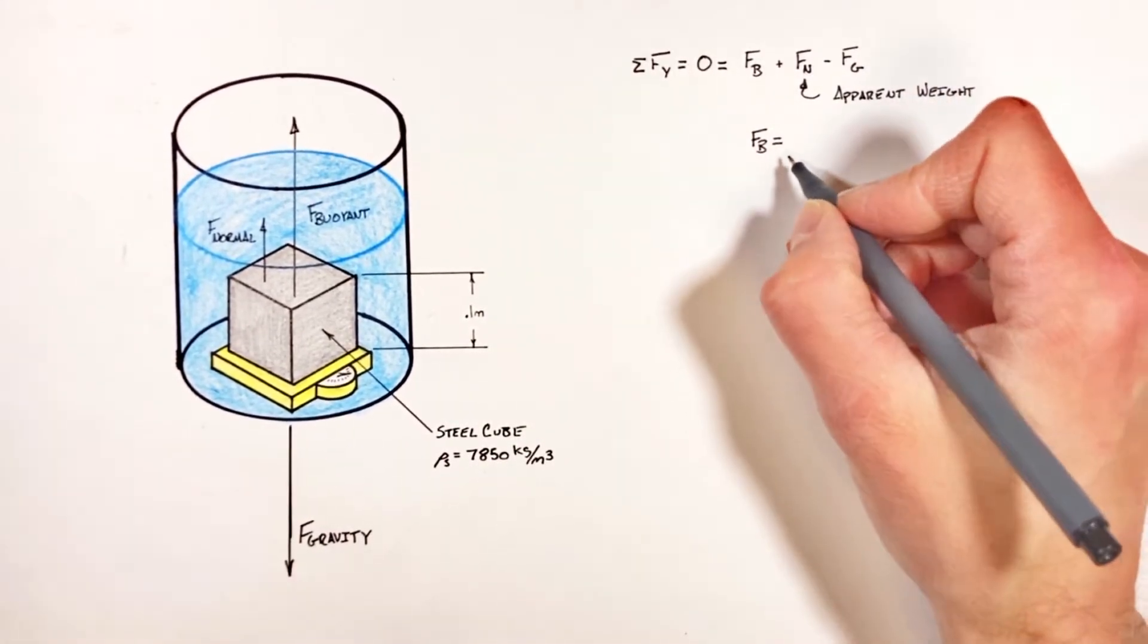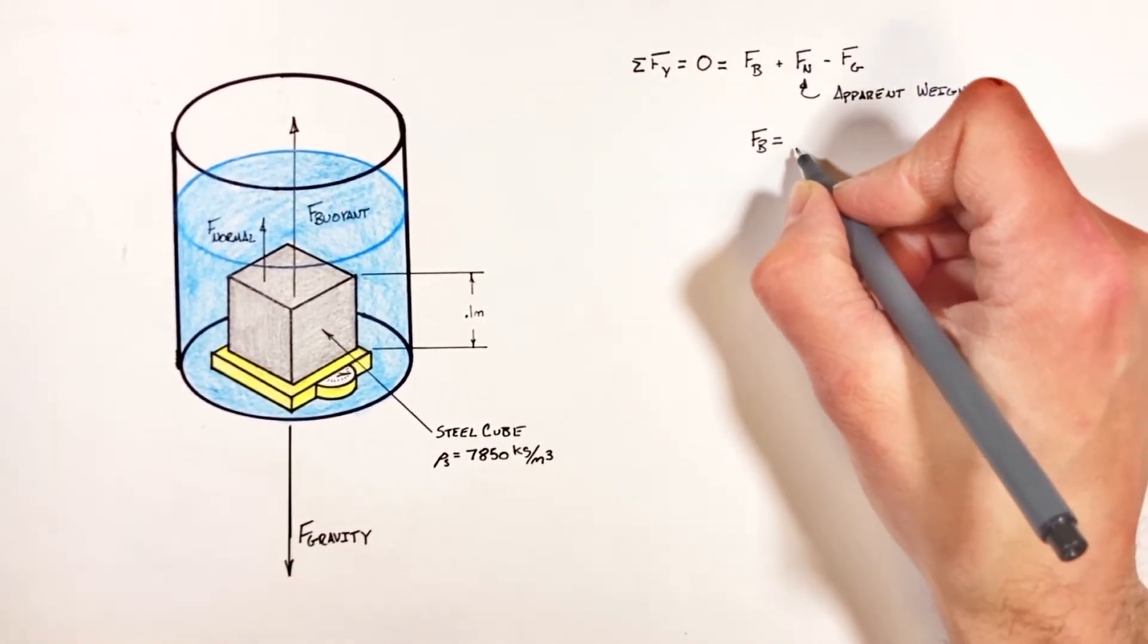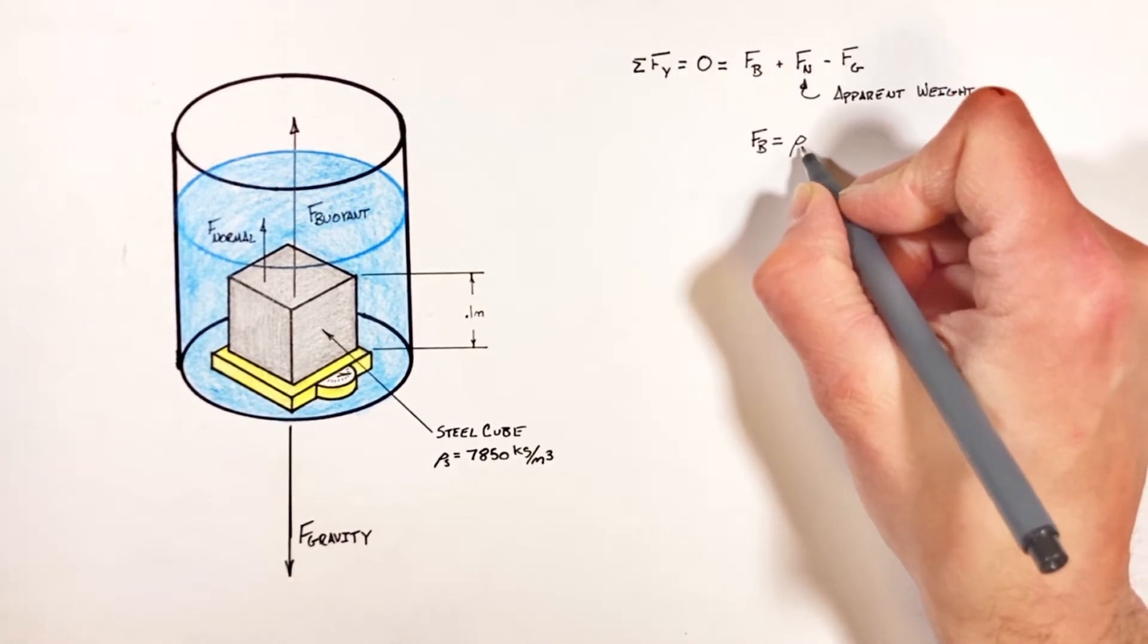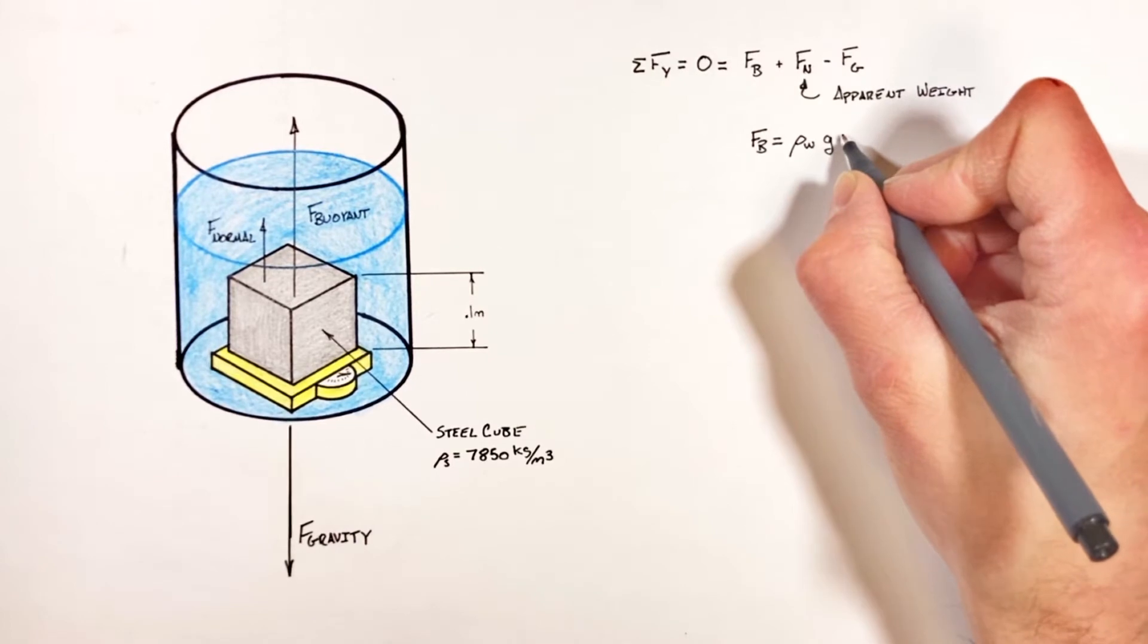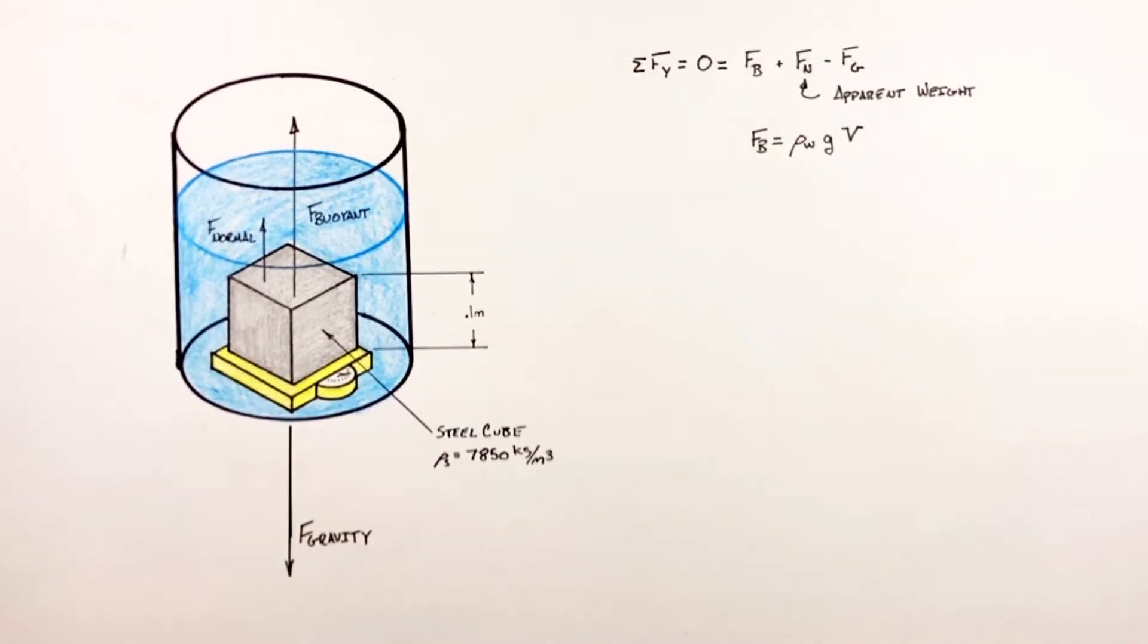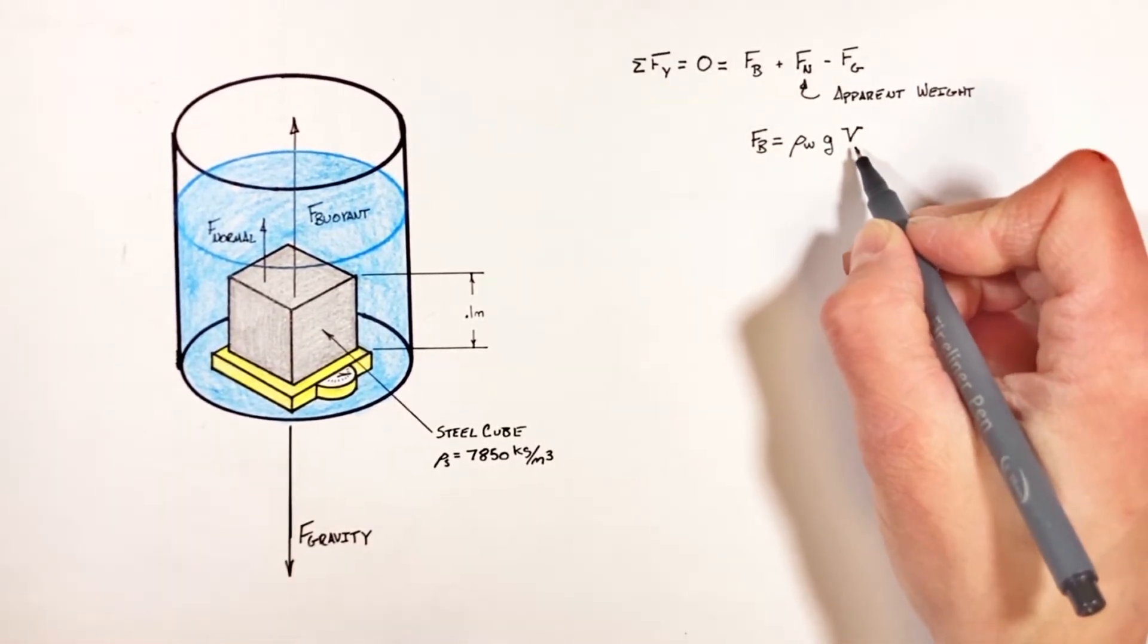So starting with the buoyant force, we know the buoyant force according to Archimedes' principle is given by the density of the fluid, in this case water, multiplied by g multiplied by the volume of the fluid displaced.